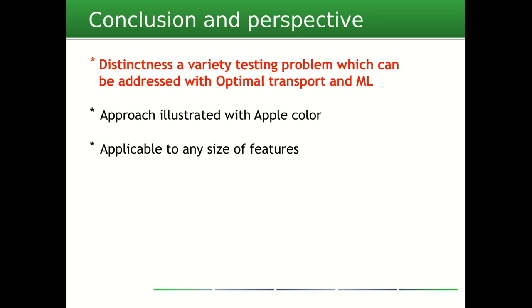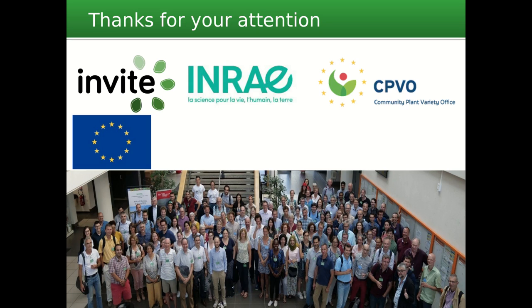Finally, we can conclude that optimal transport is an effective tool for determining whether varieties are distinct in terms of color. Thank you for your attention, and I also thank the INVITE project for funding this work.